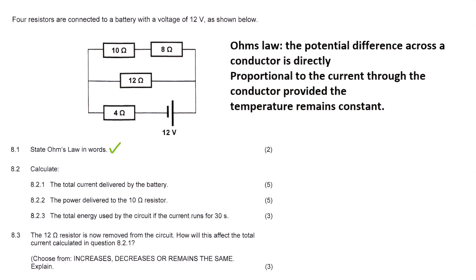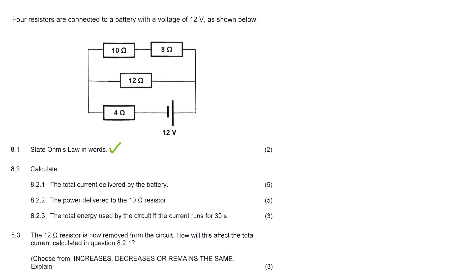Moving on to 8.2.1, for five marks: calculate the total current delivered by the battery. They didn't make it very clear in this question, but we can see there will be no internal resistance. They didn't mention anything, but usually if there is an internal resistor they would have a dotted line or a little resistor symbol. So we're not really going to use the EMF formula.